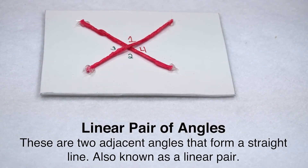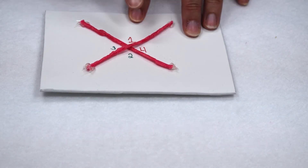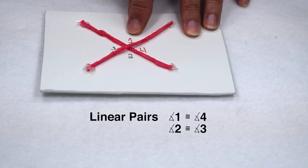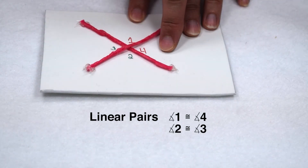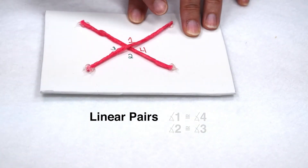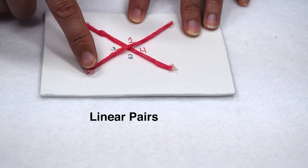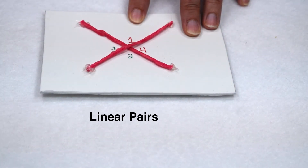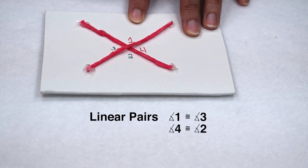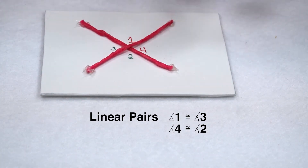Another place we see adjacent angles is when we look at a linear pair. A linear pair of angles is formed by two adjacent angles that form a straight line. So here, along this line, we would have a linear pair of 1 and 4, and then another linear pair of 2 and 3. If we went along this line, our linear pair would consist of 1 and 3, and then down here 4 and 2. Linear pairs are another way to look at supplementary angles.